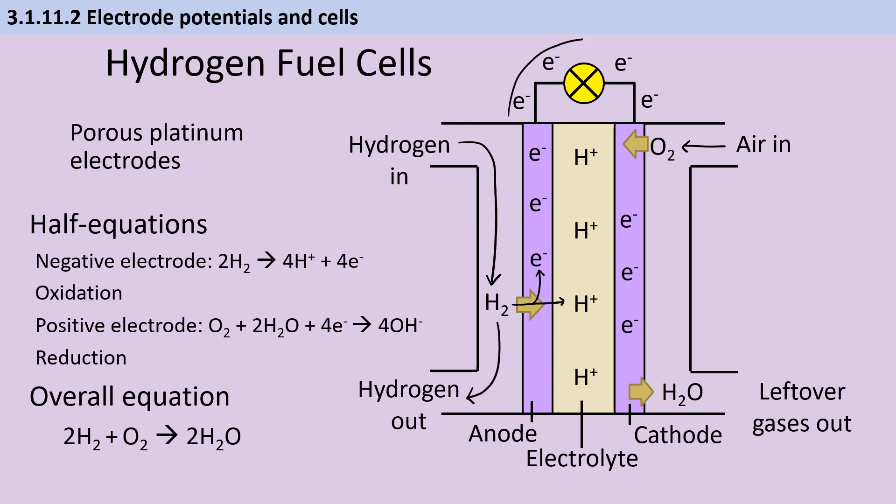These electrons travel through a wire. At the cathode, oxygen reacts with water and also these electrons to make hydroxide ions. And these hydroxide ions then join up with the hydrogen ions to make water, which is the only waste product. You should know the half equations for either electrode. And you should be able to join these together by cancelling out the electrons in order to make one overall equation, which is just hydrogen plus oxygen reacts to make water.